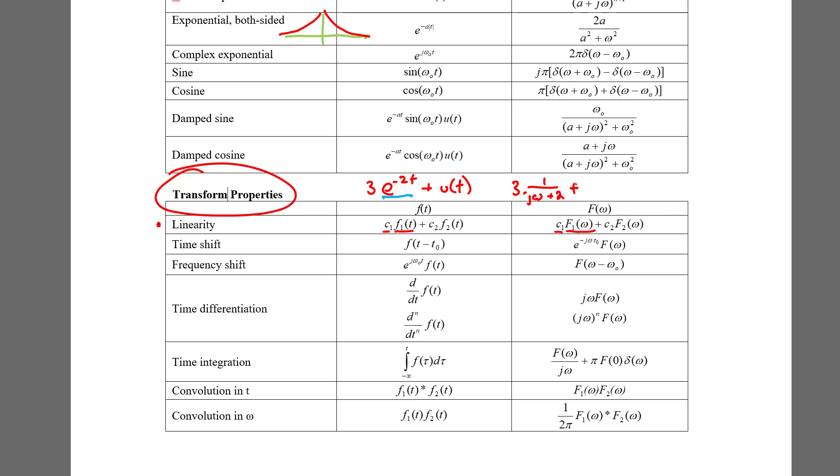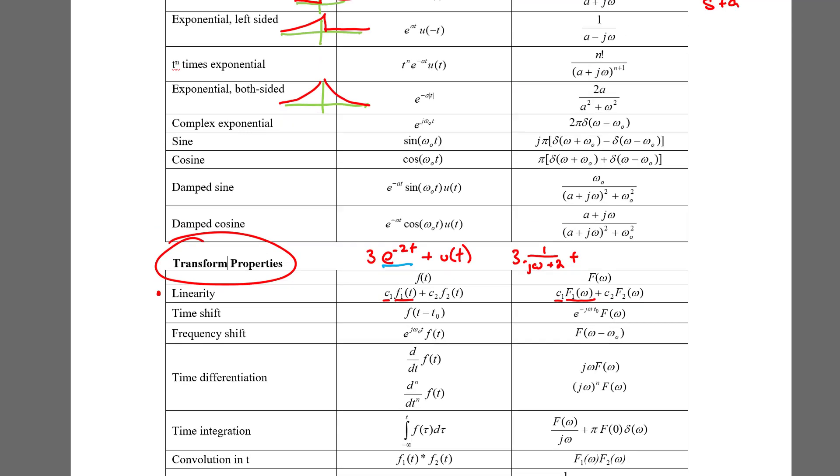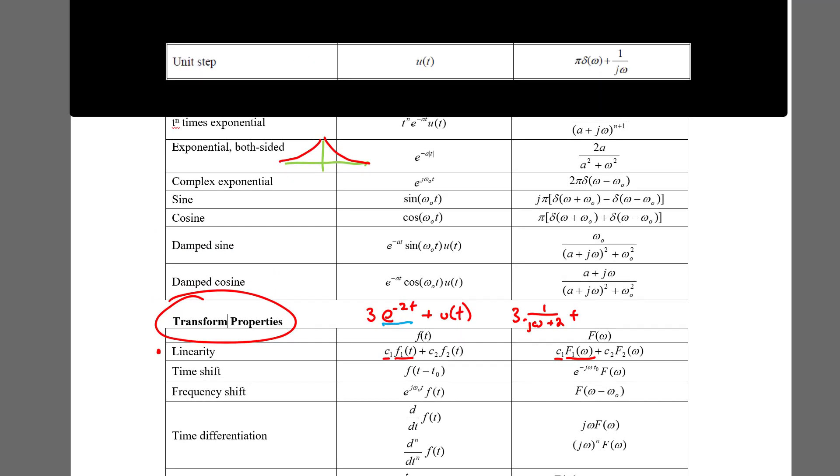Then in the transform domain, that would be, I have to scroll up and take a look at what that transform is. Here's our unit step over here, so that would be pi times this impulse plus 1 over j omega, where this whole section is that section.